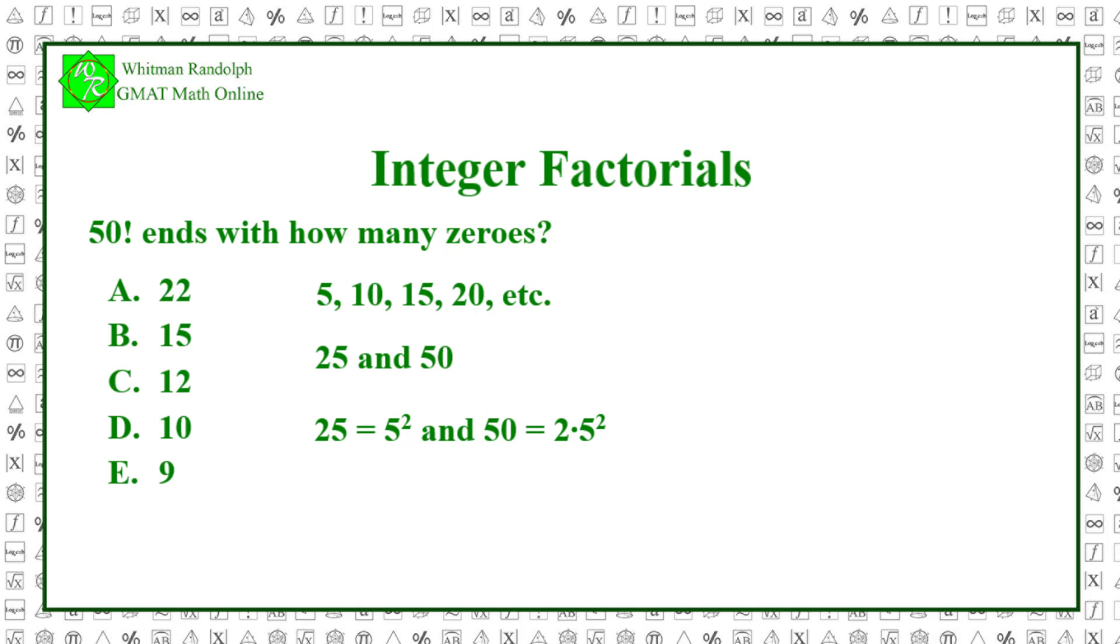Thus, for each of these two numbers, there is an extra zero at the end of 50 factorial. Altogether then, there are 12 zeros at the end of 50 factorial. So the correct answer is C.